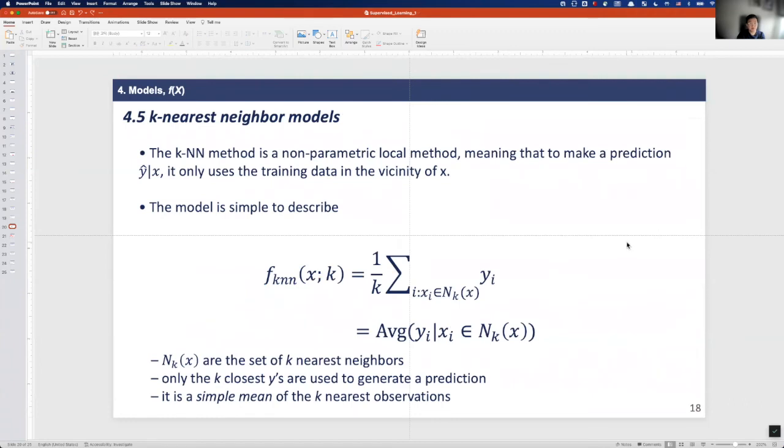So we can increase the complexity of model as high as the number of data samples. For example, k-nearest neighbor or KNN models are commonly used to predict response variable if you have enough data samples. The KNN method is a nonparametric local method,